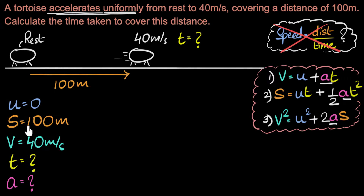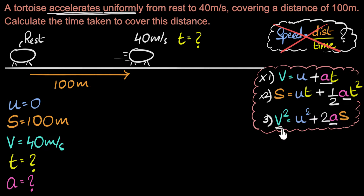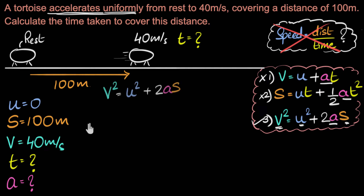Pause and see which of the three equations helps us calculate A given what we know. The first equation has A, but also T, which is unknown — two unknowns, so we can't solve it. The second equation also has T, same problem. The third equation has no T. We know V, we know U, and we know S. So the third equation is our winner — it will help us calculate A.